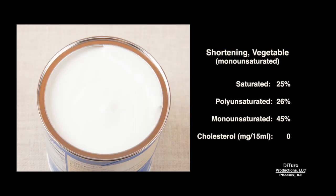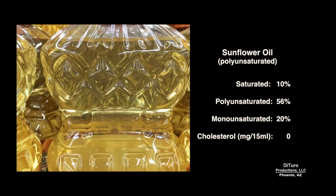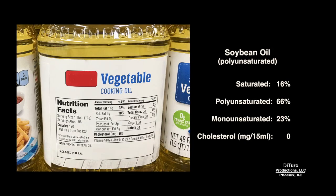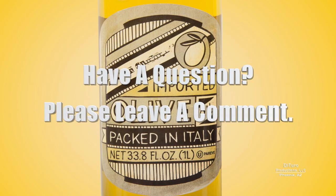Shortening is a monounsaturated fat with slightly higher saturated fat than hard margarines. Sunflower oil is high in poly and monounsaturated fats and low in saturated fat. Our last oil is soybean, which has about 66% polyunsaturated fat. Please leave a comment if you have any questions about this video. Thank you for watching and healthy eating!